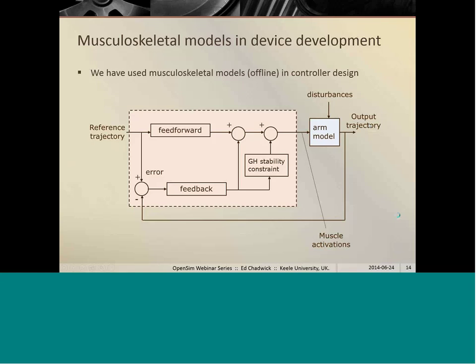That means that our feedforward controller here is actually an inverse dynamic model because we've got the reference trajectory going in as the input and the muscle activations coming out as the output. So our model is actually used twice here in determining our ideal controller. In addition to that feedforward part, we've also got a feedback part which can correct the errors in the trajectory away from our reference trajectory and ensures the stability of the glenohumeral joint and scapular stability during the movement.